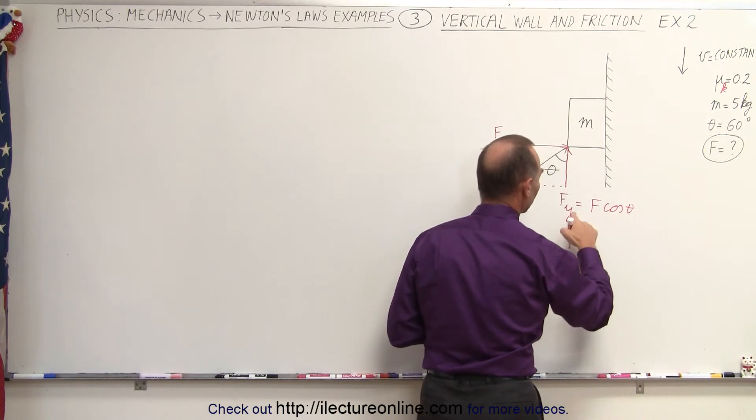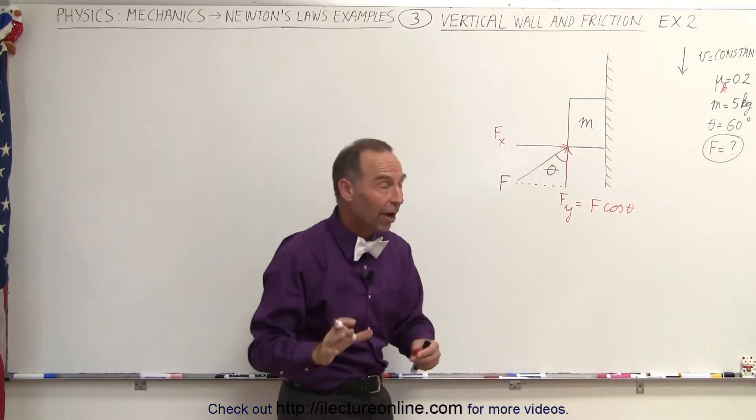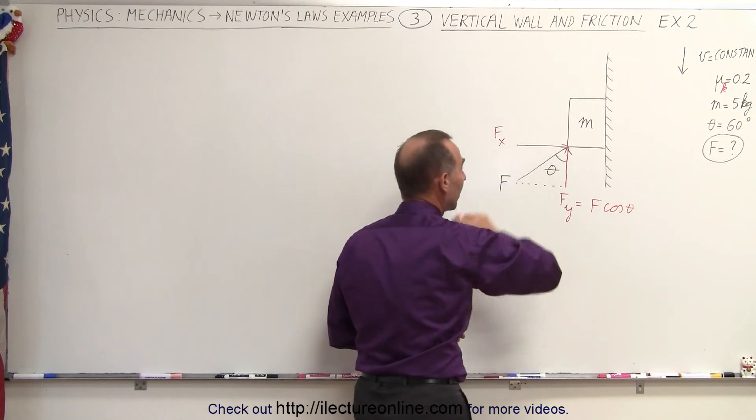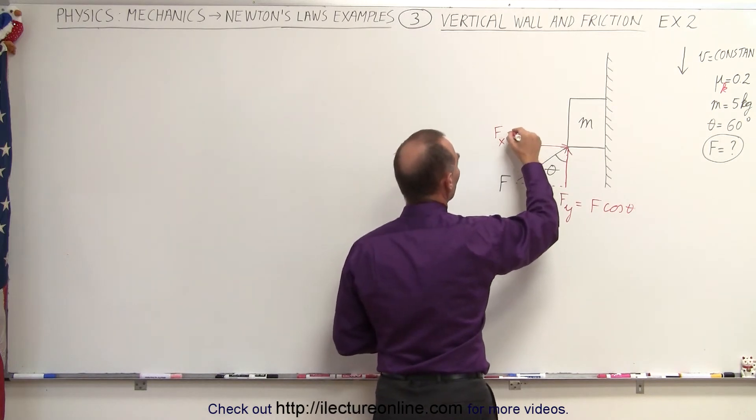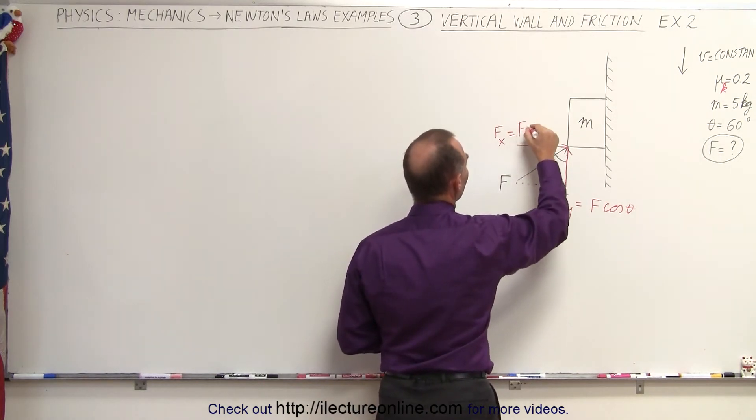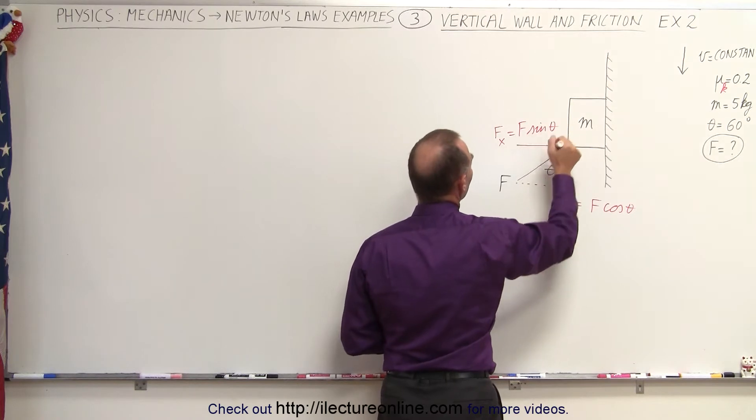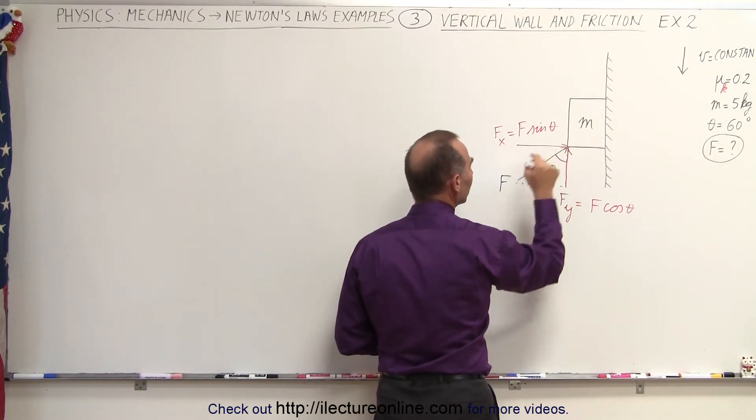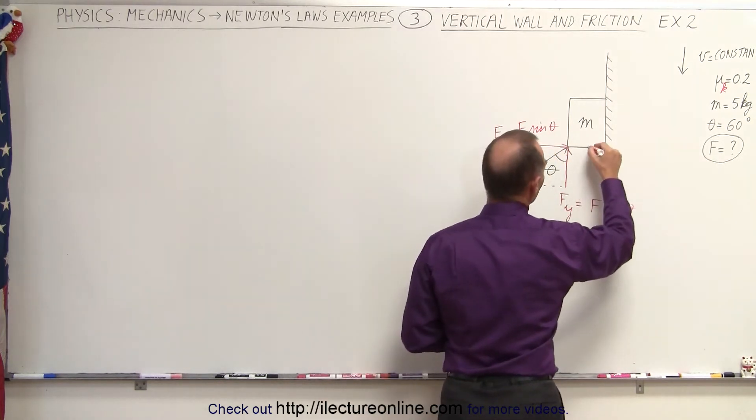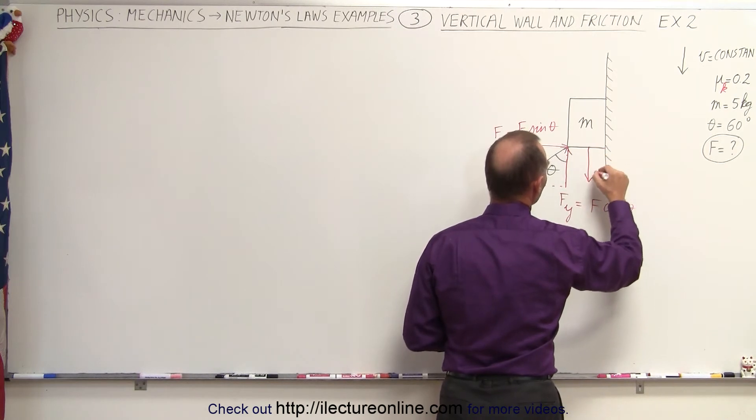Again, the cosine associated with the y direction seems kind of odd, but it's because the way the problem is drawn. And then the horizontal component will be f times the sine of theta, because it's the opposite component to the angle. We still have the force due to gravity, mg.